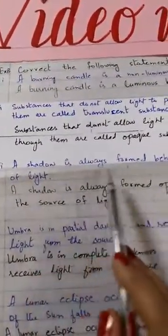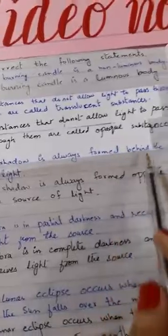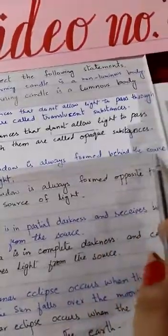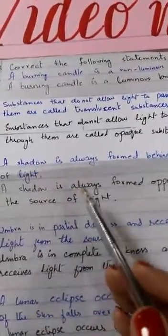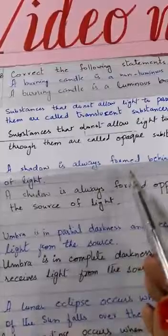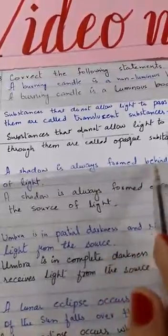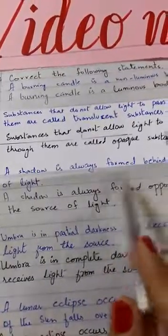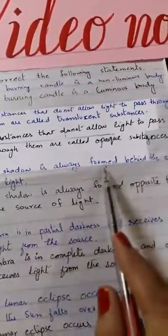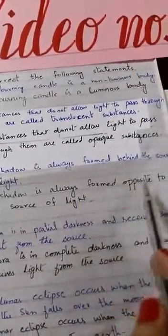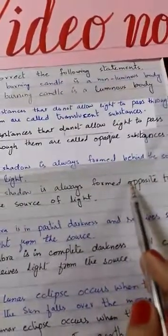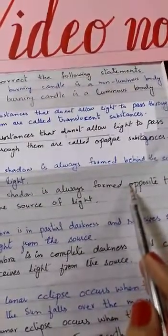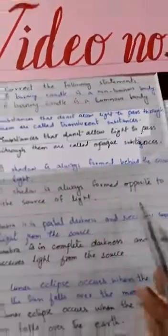Point number 3 — a shadow is always formed behind the source of light. A shadow is always cast — not behind, you will replace 'behind' with 'opposite to the source of light'. The shadow forms directly opposite to the source of light.